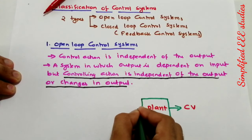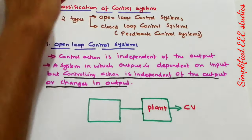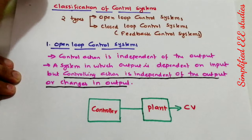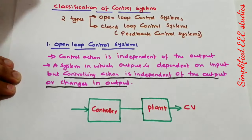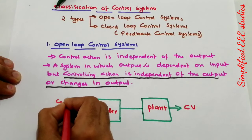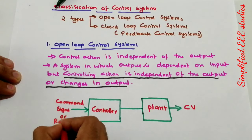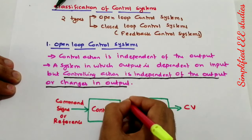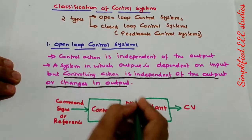Then we have a controller. What is the input of the controller? It will be the command signal, or reference signal, or set point. The output of the controller will be the manipulated variable. Please watch my previous video for more information on these terms.